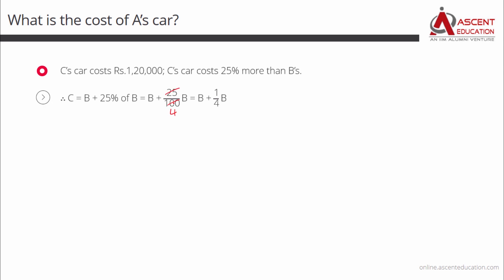25 and 100 will cancel to leave us with 1 by 4. So C is equal to B plus 1 by 4B. Take 4 as a common denominator. So you will get C is equal to 5 by 4B, or 5 by 4B can be written as 1 lakh 20 thousand, which is the cost of C's car. To find the value of B, cross multiply this 5 by 4. So the value of B is equal to 4 by 5 into 1 lakh 20 thousand. 1 lakh 20 thousand and 5 will cancel to leave us with 24,000. 4 into 24,000 is equal to 96,000.